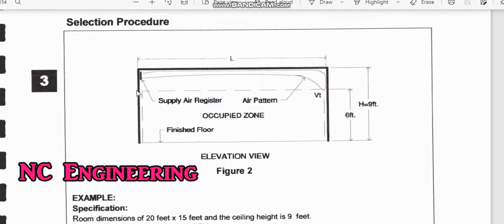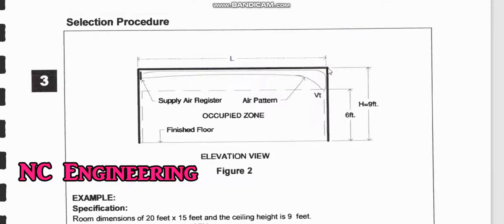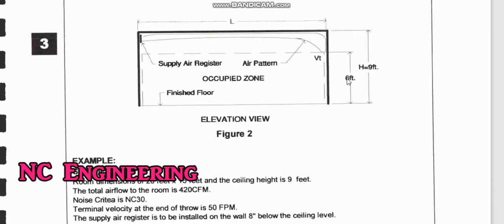If we have one room with a length of 20 feet, a width of 15 feet, and a height of 9 feet, and we have one grill, the CFM is 420 CFM. We will calculate the throw.